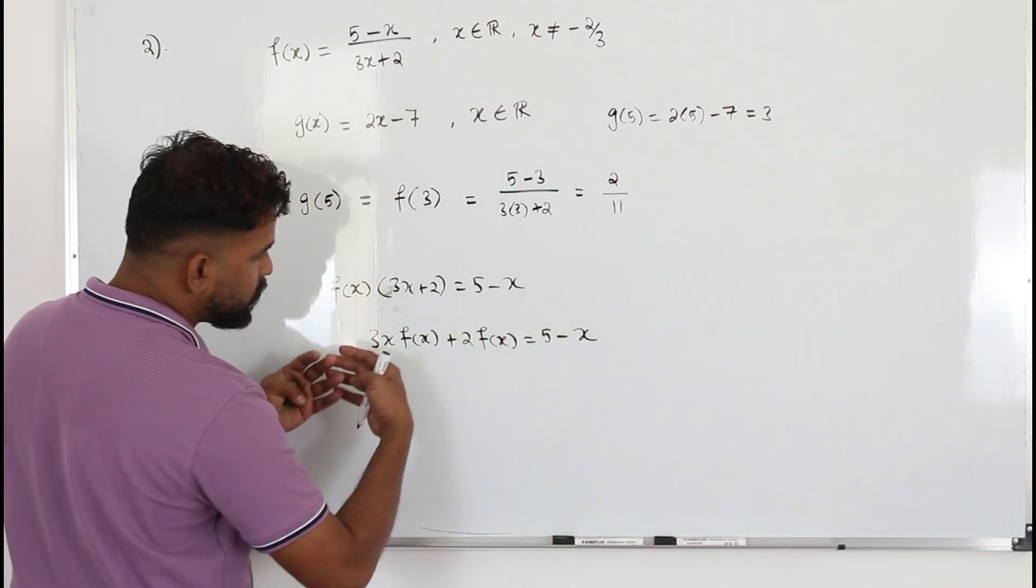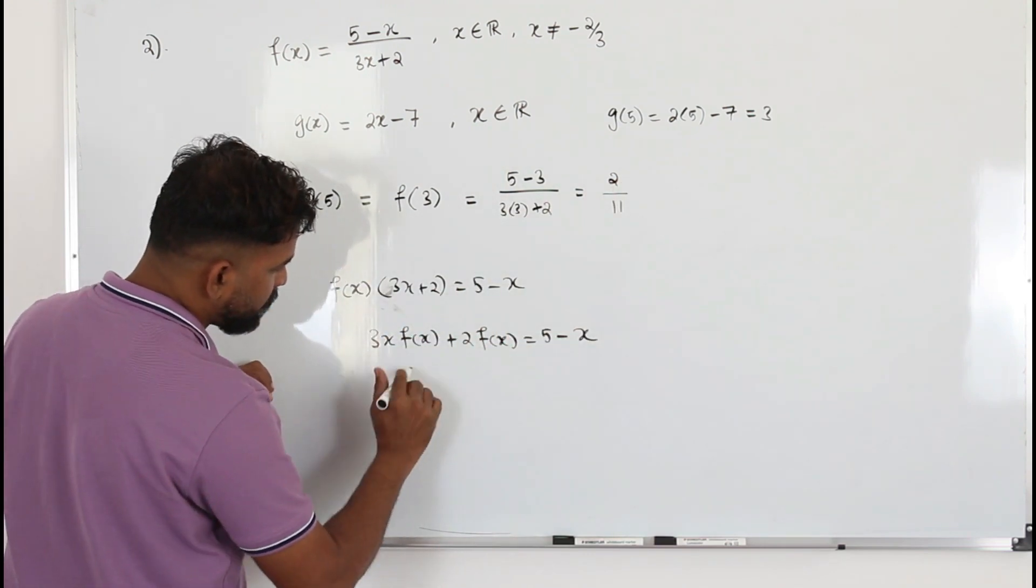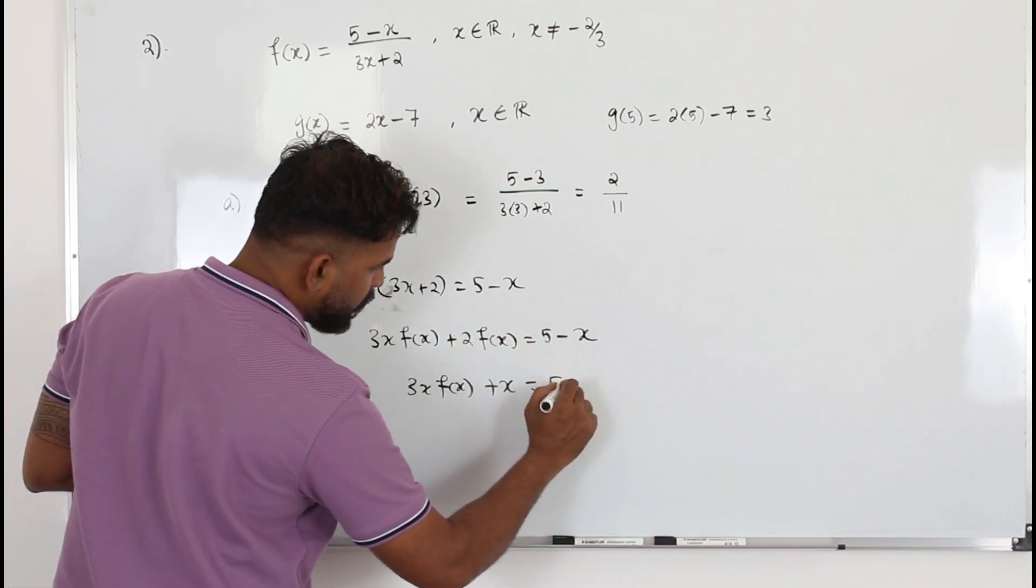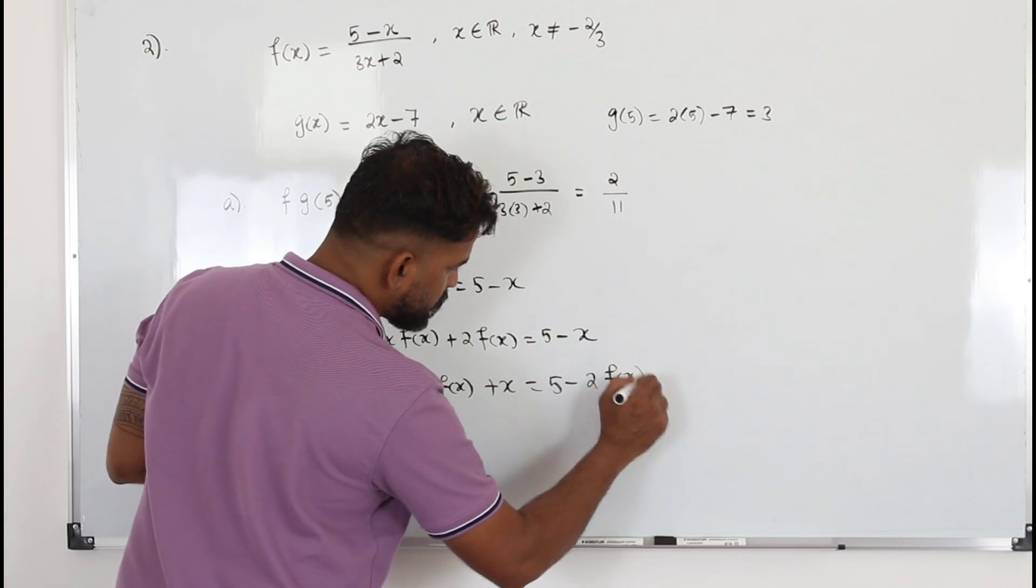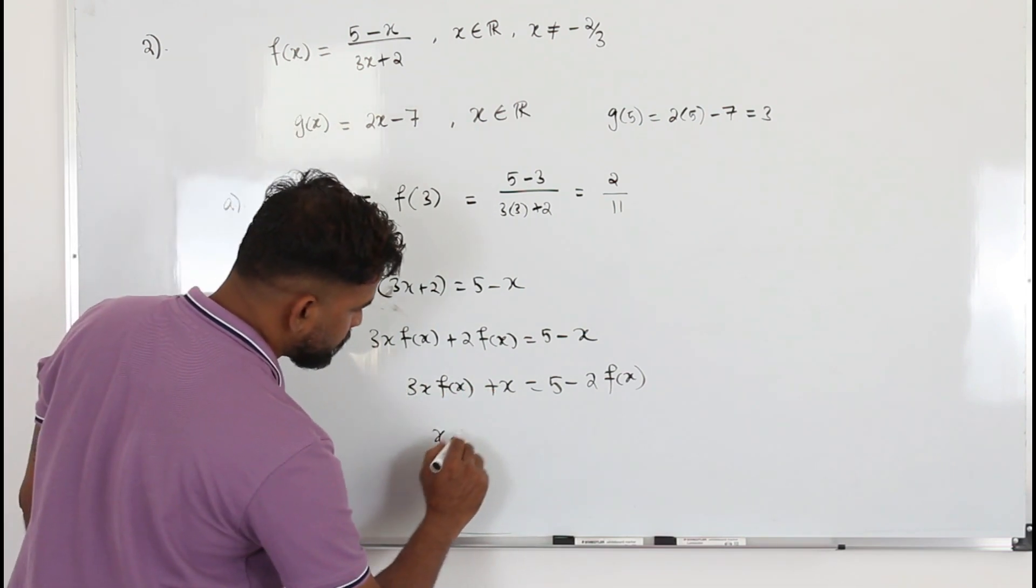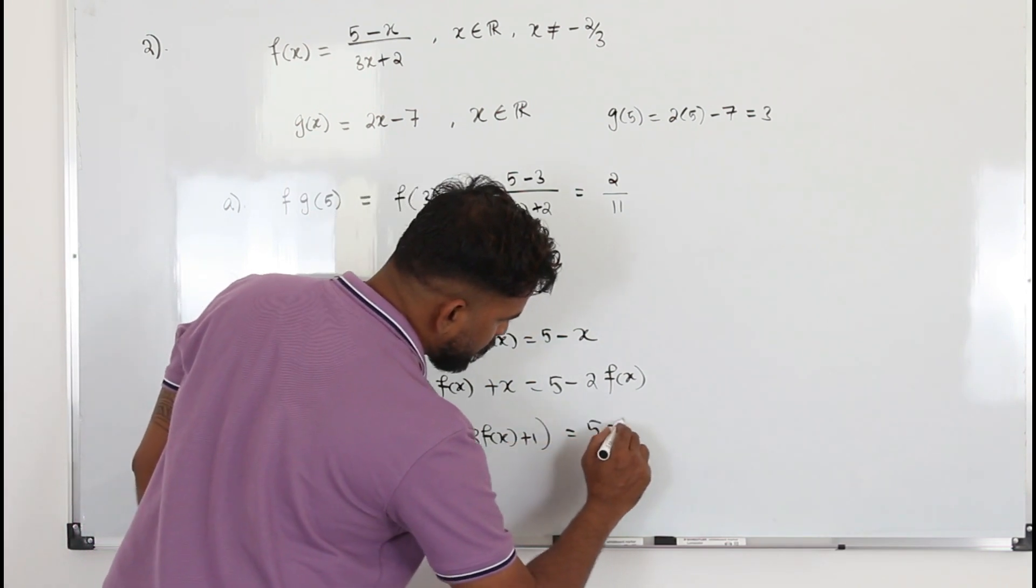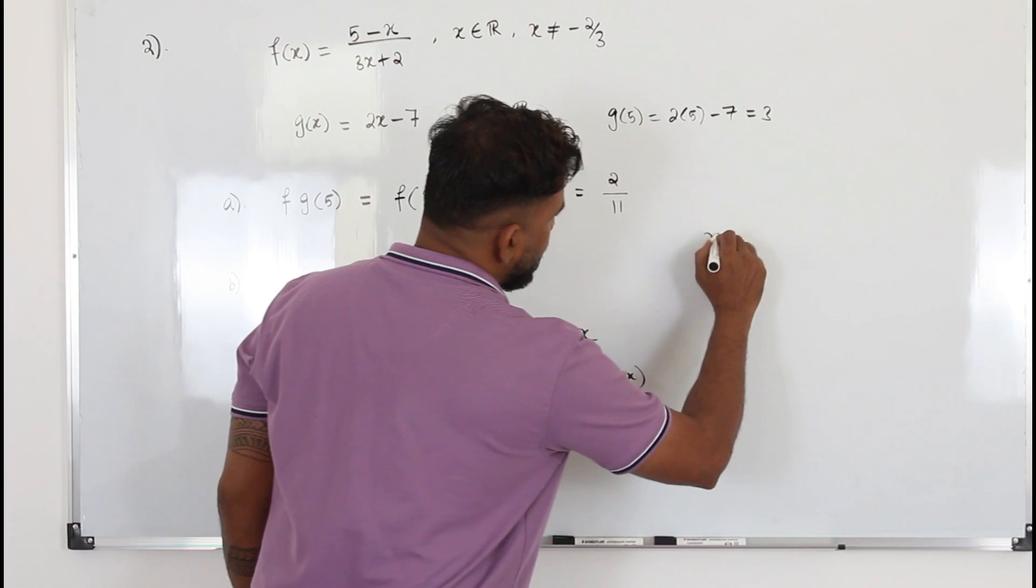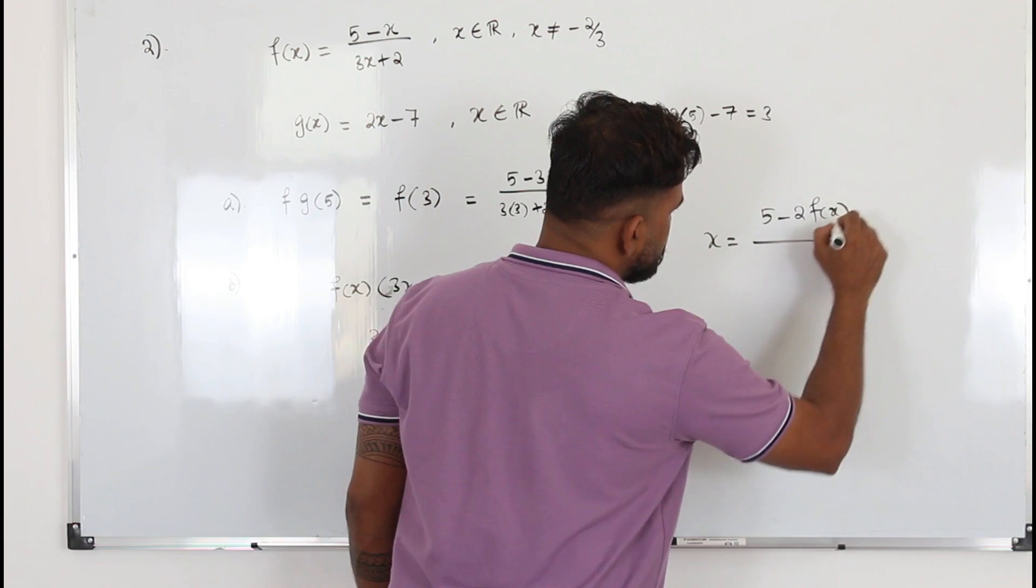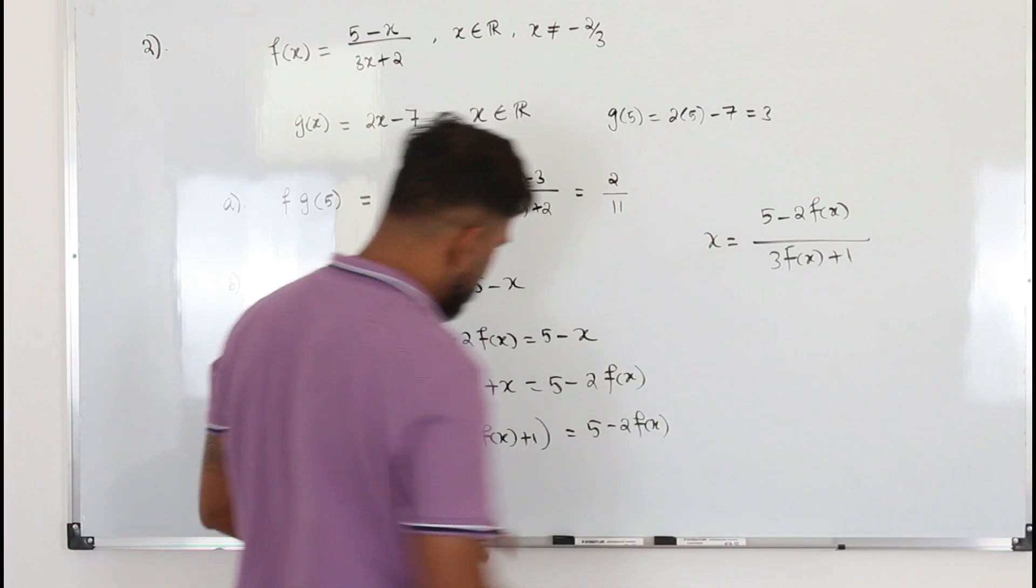So you need to collect all the terms involving x to one side. The rest of the terms push it to the other side. So 3x f(x), bring this -x here, becomes +x equals 5 - 2 f(x). This 2 f(x) comes here, becomes minus. Take x as a common factor. 3 f(x) + 1 equals 5 - 2 f(x). So x is going to be (5 - 2 f(x)) divided by (3 f(x) + 1).